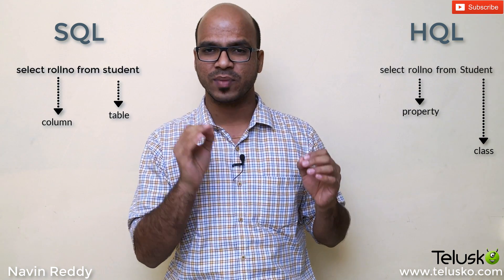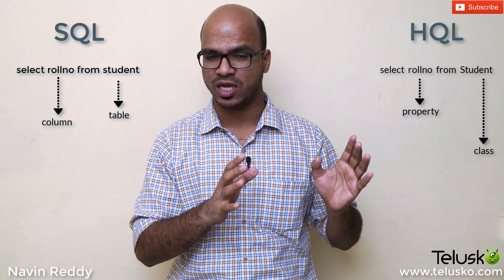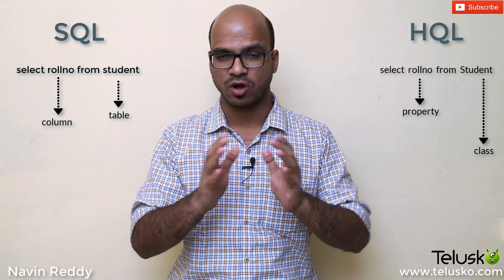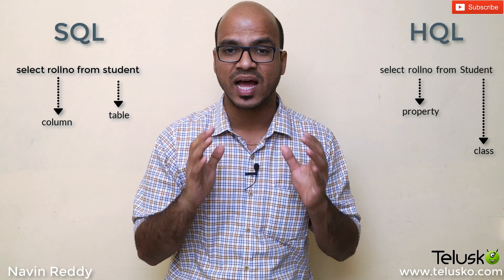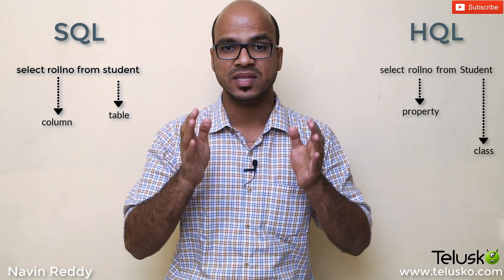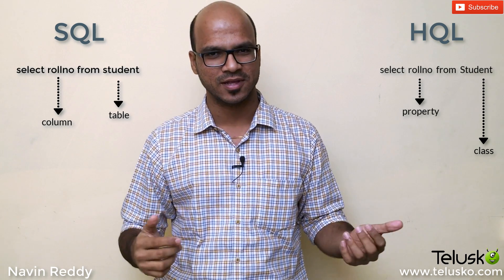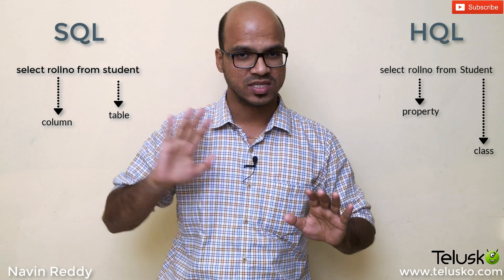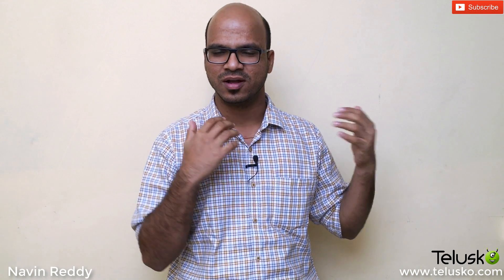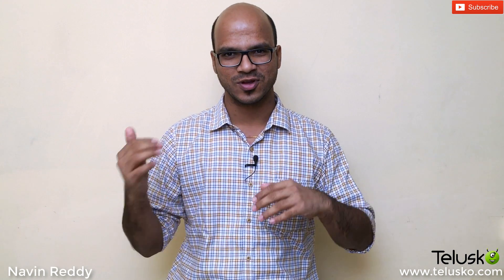In HQL, you write SELECT, then the field name — but this field name is not a column name, it's a variable name or property in your class. Then you mention the class name, not the table name. That's why you can see 'student' with a small 's' in SQL and 'Student' with a capital 'S' in HQL. You have to mention the class name, not the table name — that's something to remember. Otherwise, it's almost the same as SQL.